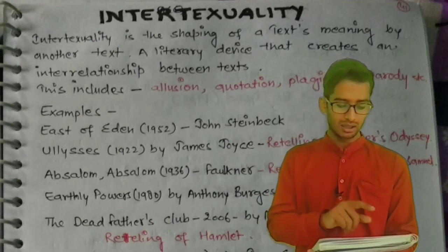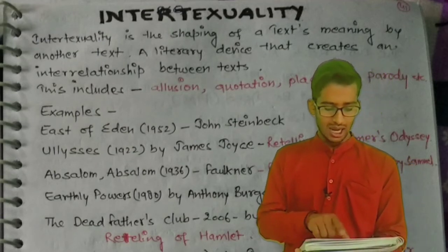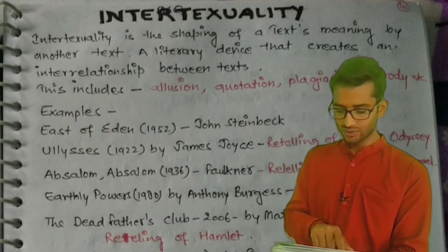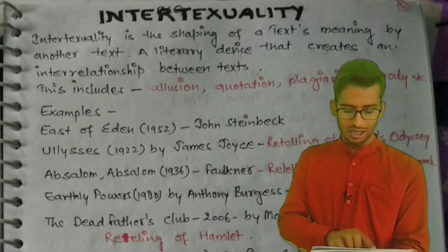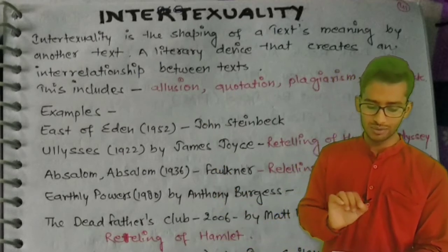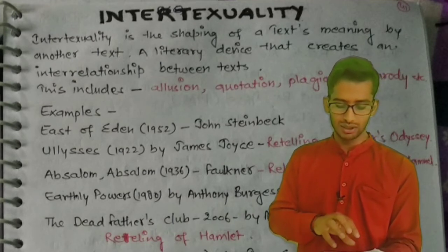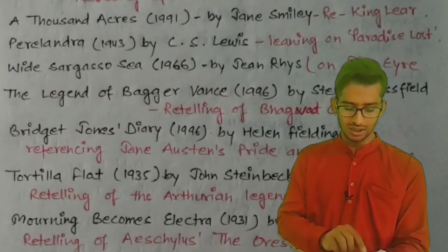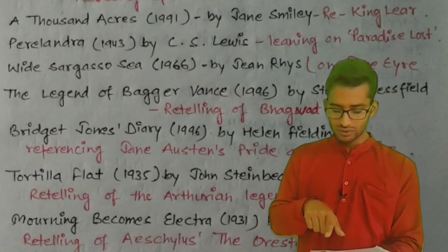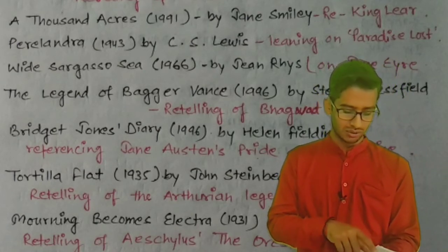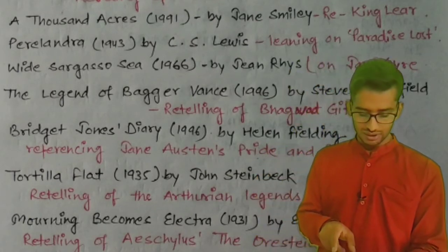'Earthly Powers' (1980) by Anthony Burgess, and the next one is a retelling of Hamlet — 'The Dead Father's Club' (2006) by Matt Haig. You need to remember all these examples. Also, 'A Thousand Acres' (1991) by Jane Smiley, which is a retelling of King Lear.